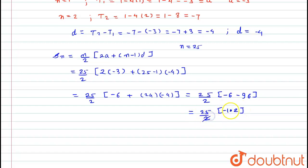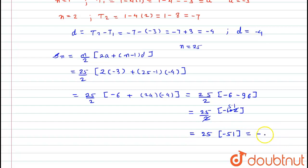After doing the addition: minus 6 plus minus 96 gives minus 102. So we have 25 divided by 2 into minus 102. Simplifying: 102 divided by 2 gives 51, so this becomes 25 times minus 51, which gives us minus 1275. So the sum of the first 25 terms of the AP is minus 1275.